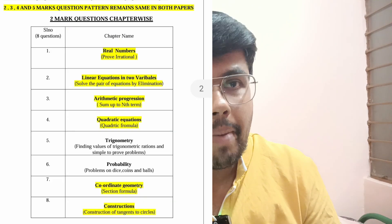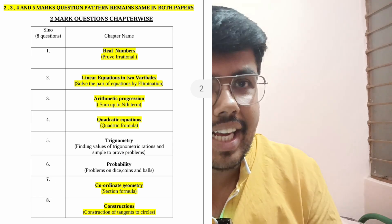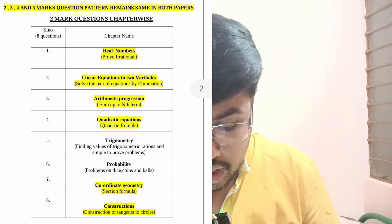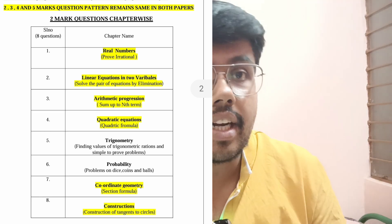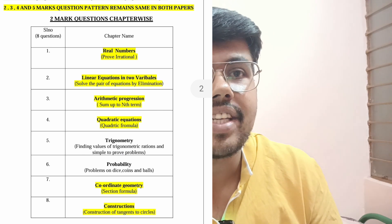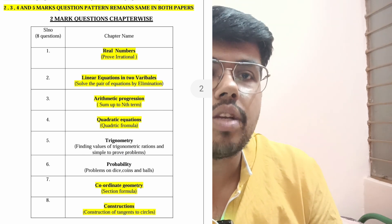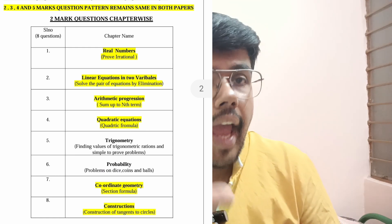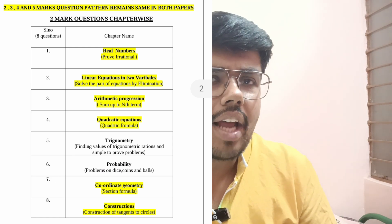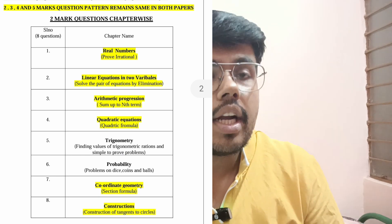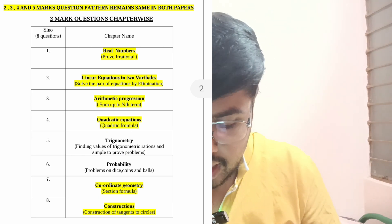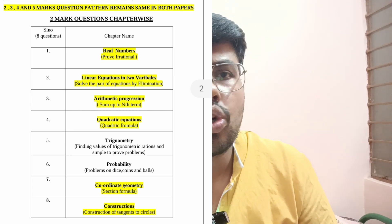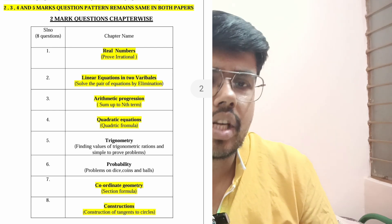Coming to two-mark questions: real numbers — prove irrational, direct question. Linear equations in two variables — elimination method, direct question. Arithmetic progression — sum up to N terms, 100% direct. Quadratic equation — finding equation using quadratic formula, confirmed question. Section formula is a confirmed question. In the final exam, there could be a little change — you can also expect a distance formula here. Prepare for both distance formula and section formula for two marks. Construction: tangent construction from an external point — there are two varieties, practice both.